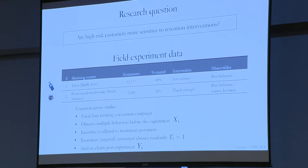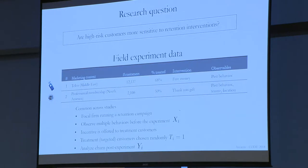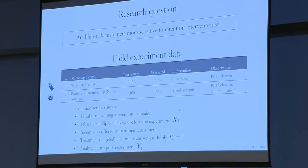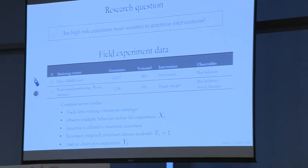The first firm, Telco, observes the usual suspects like past behavior in terms of volume of data, volume of calls, international calls, et cetera. The professional membership had a little more information on the consumer, like how long the relationship has been and a little bit of location data to use as covariates.